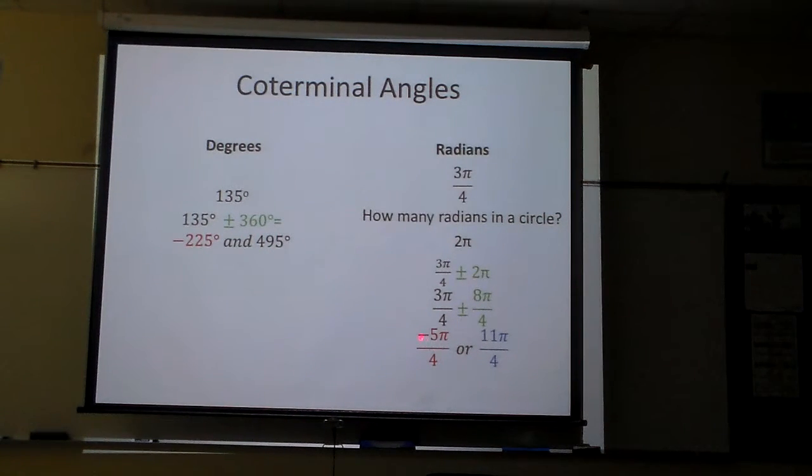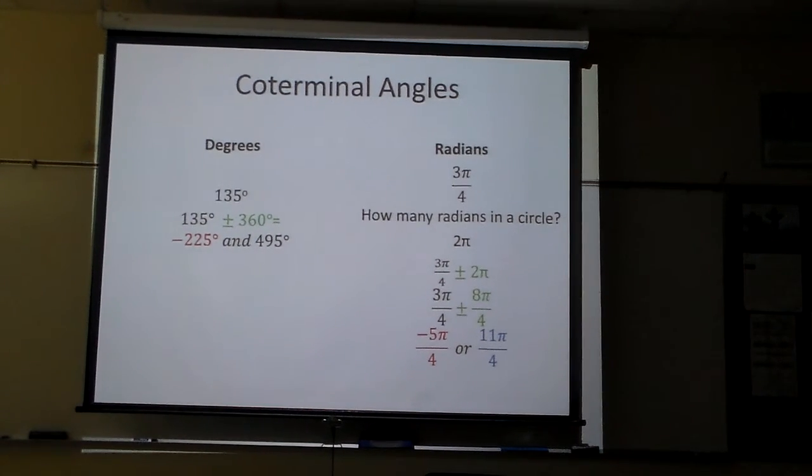Negative 225 is the same as negative 5π over 4. And 495 is the same thing as 11π over 4.